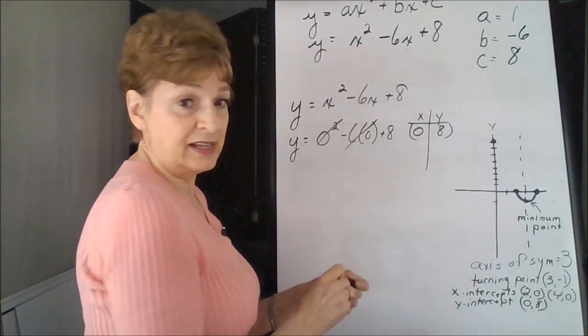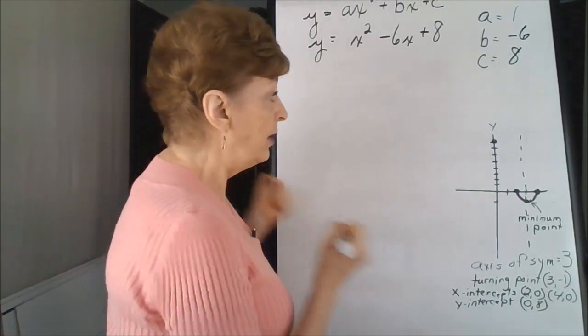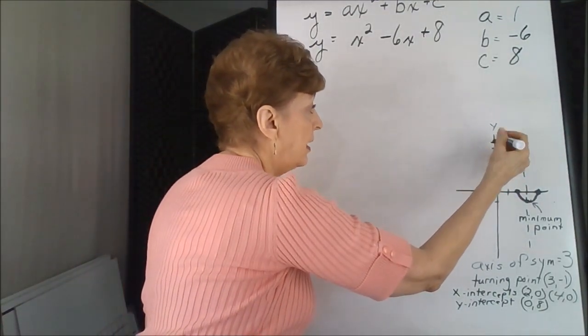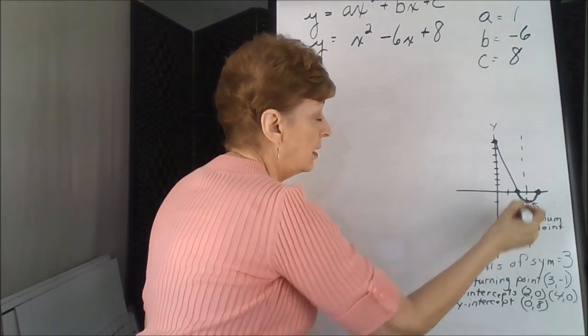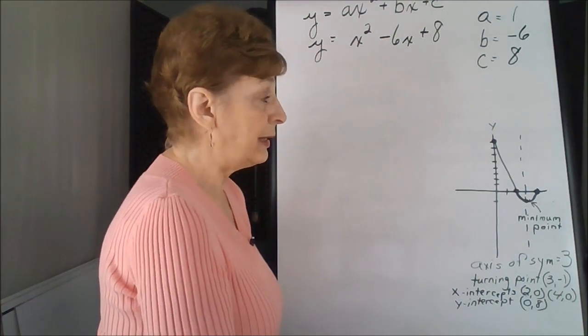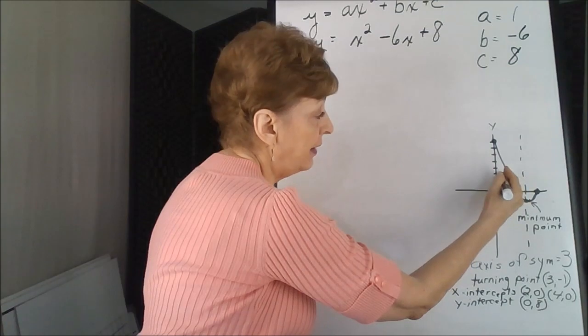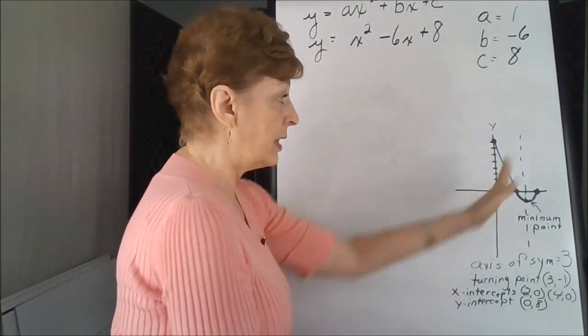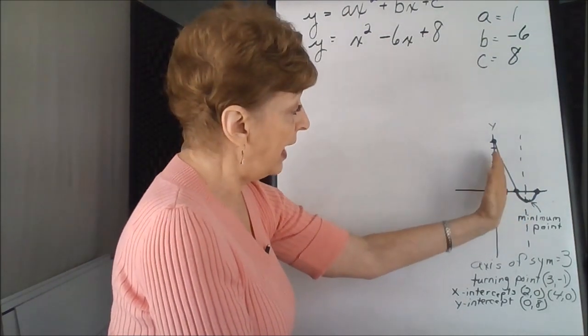That tells us that it crosses the y-axis at zero, eight. At this point, we could draw in our next part of it and realize that the axis of symmetry is really the reflection of this parabola from the left-hand side to the right-hand side. It's like we put a mirror right there on that dotted line on that axis of symmetry, and it reflects everything that you see to the other side.